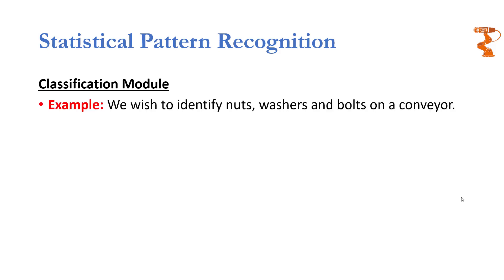I will proceed with an example in which we wish to separate nuts, washers, and bolts. To achieve this recognition task, we need features that will allow us to separate the three kinds of objects. One possible feature may be circularity, which will have higher values for washers, a bit lower for nuts, and considerably lower values for bolts.